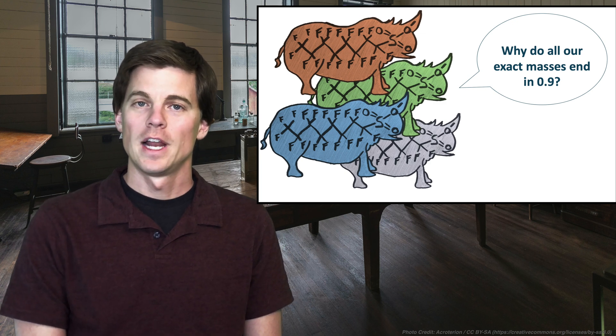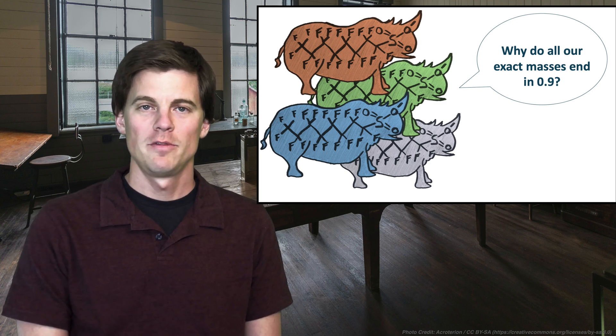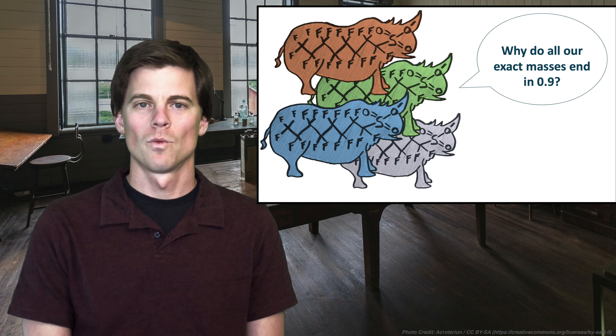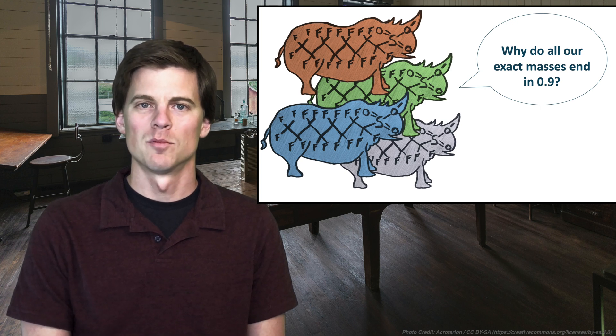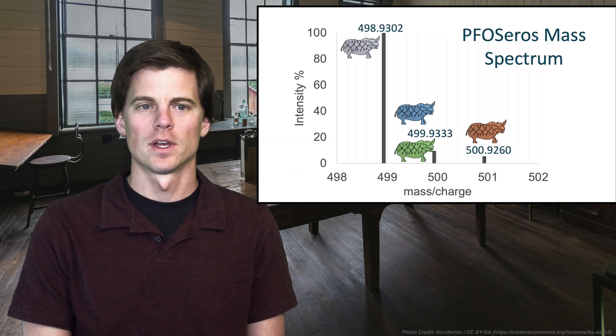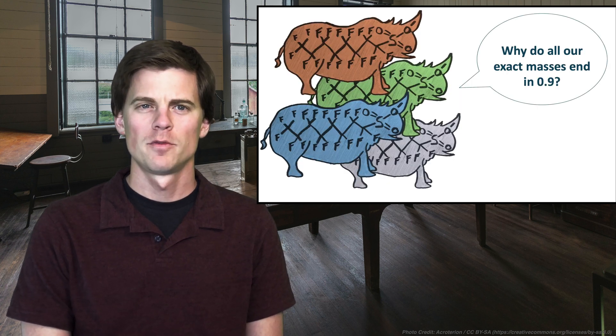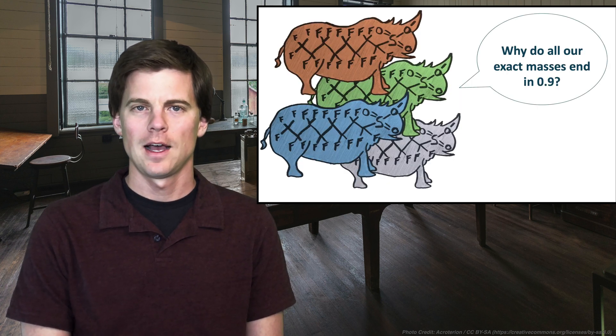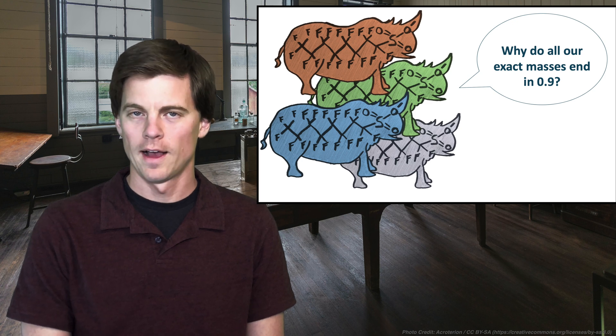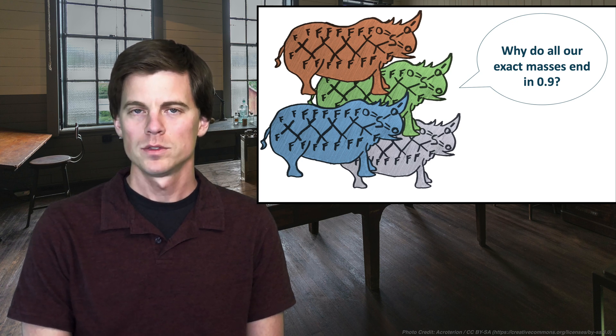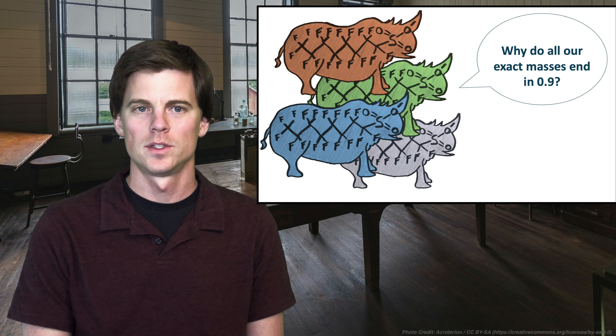So the primer for next episode, why the PFOS got together and they're confused. Why do all their masses end in 0.9? So let's go back real quick. 499.9, 498.9, 500.9. If you're familiar at all, you will see out in the world that most things don't have a decimal point of 0.9. Most things have 0.0, 0.1, 0.2. So PFOS is confused and they want to know why.